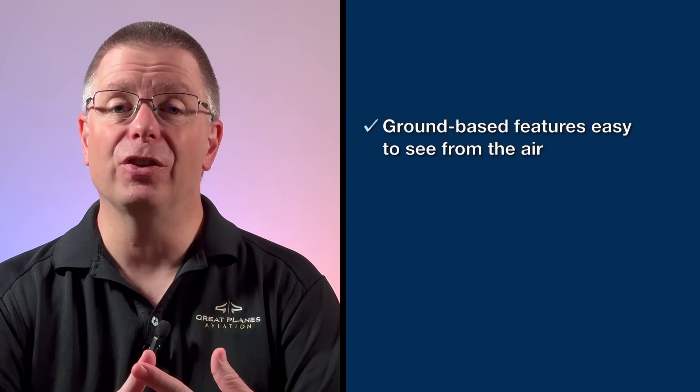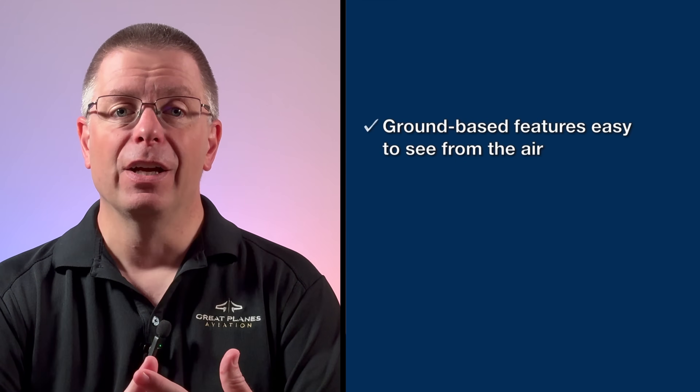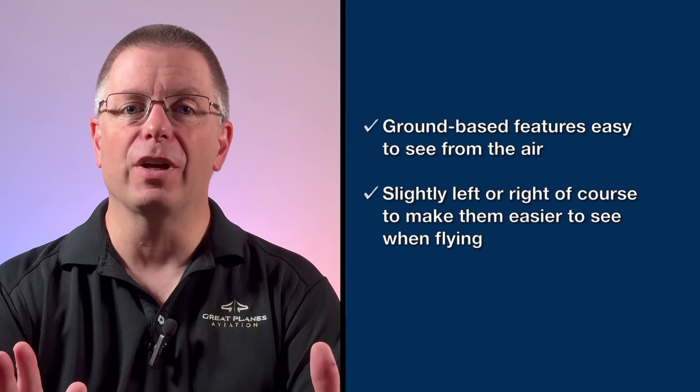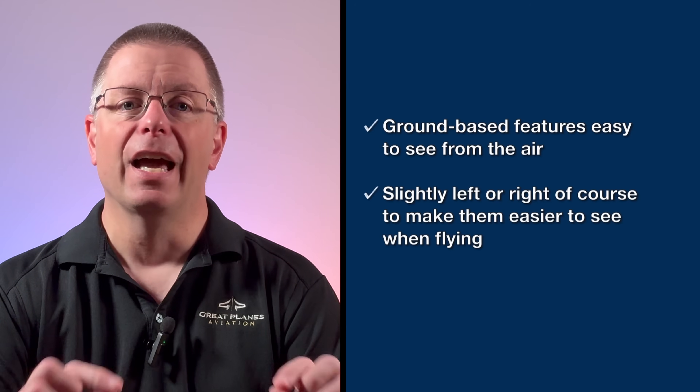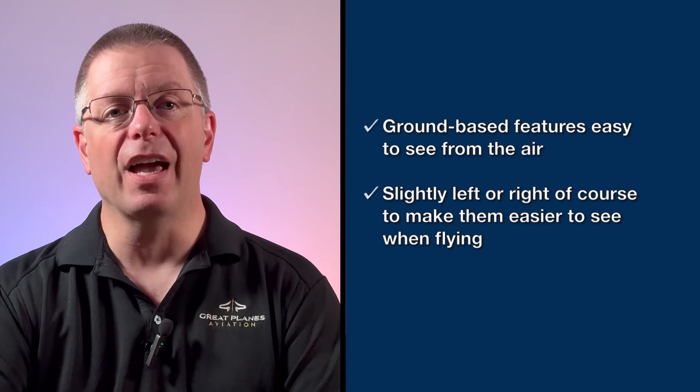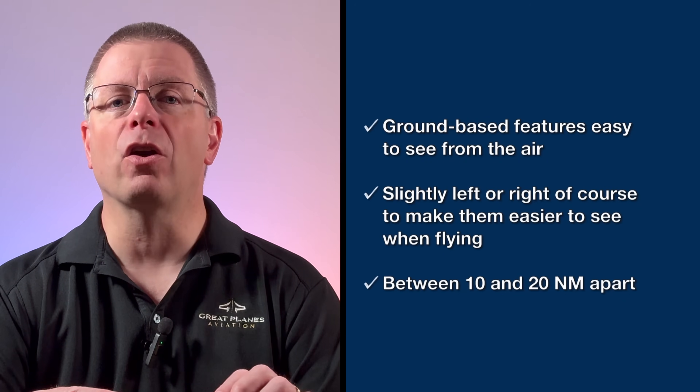Fortunately, ForeFlight makes that easy too. From a previous video about flight planning, we learned that waypoints should be ground-based features that are easy to see from the air. They should be slightly left or right of the actual course to make them easier to spot when flying, and they should be between 10 and 20 nautical miles apart. With that in mind, we chose the following waypoints for the earlier videos.